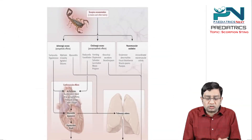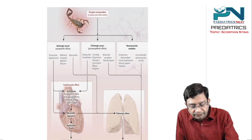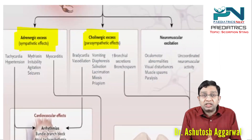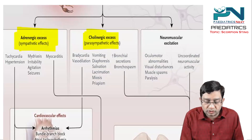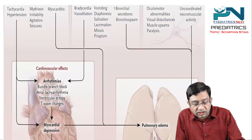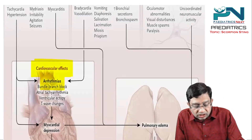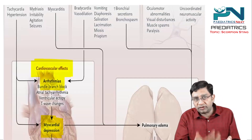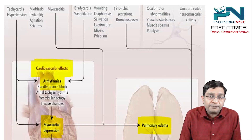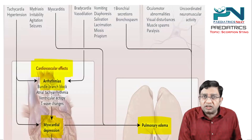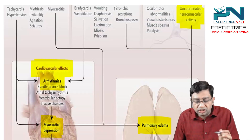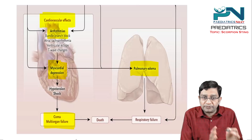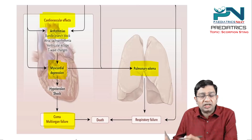Here is a simple picture showing what actually happens. A scorpion bite triggers both the adrenergic axis and the cholinergic axis. All the features are related to these axes, and the important thing is the cardiovascular effects. In the heart there is risk of arrhythmias and myocardial depression — left ventricular failure, which can lead to pulmonary edema. So you are worried about heart involvement, lung involvement, and uncoordinated neuromuscular activity leading to multi-organ failure. Remember: heart arrhythmias, lungs pulmonary edema, and CNS encephalopathy.